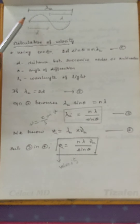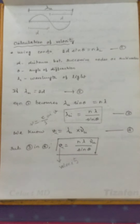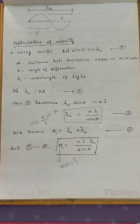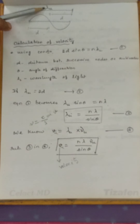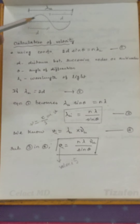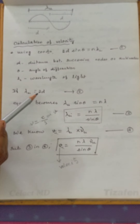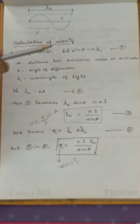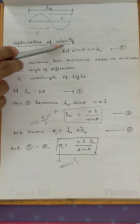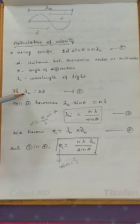For one complete wavelength of the ultrasonic wave, if d is the distance between two nodes and also d is the distance between two antinodes, then one complete wavelength λ_u equals 2d. So we can write λ_u = 2d. In the diffraction expression, instead of 2d, we can substitute λ_u.